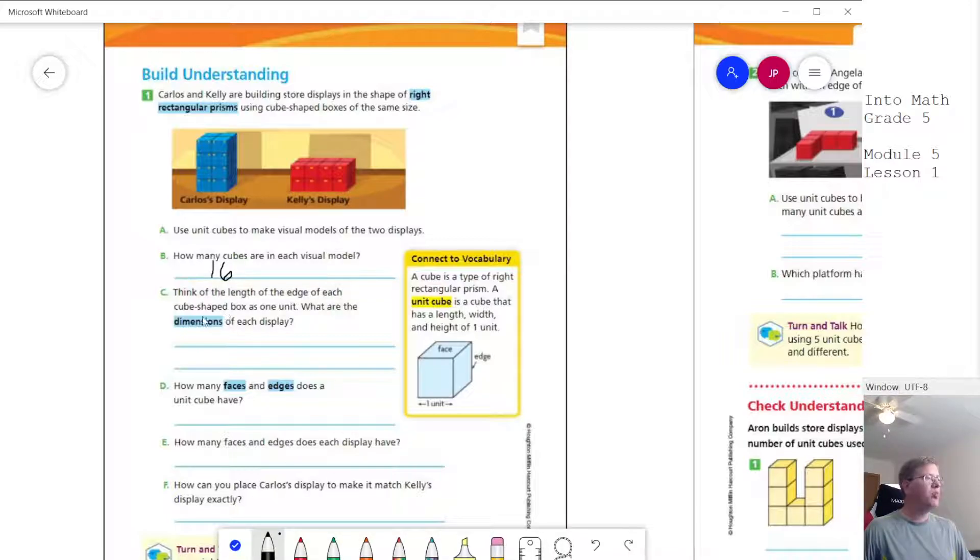And then one of the edges. So what are the dimensions for the first one? We would say if we're doing the length, we would do two, two. So two times two, and then the height would be four. For the other one, we're going to do four times two times two.